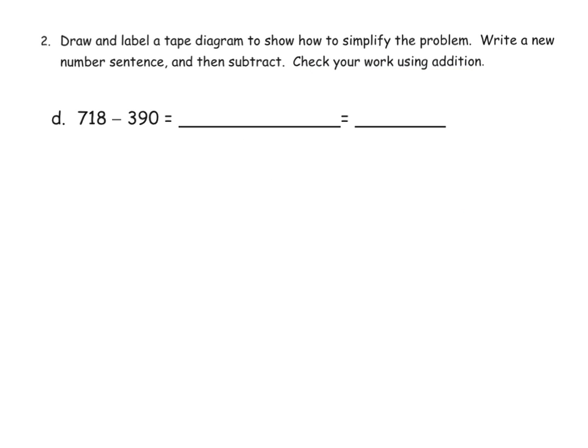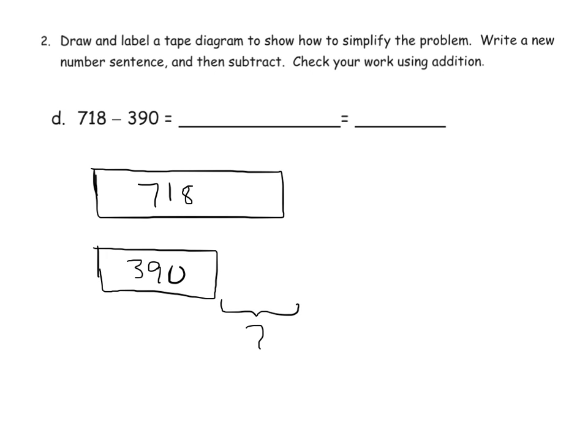And our last problem for this video. We have 718 minus 390. So we're going to draw our tape diagram. Here's 718. And there's 390. And right here, there is our gap. So that is the answer. But subtracting by 390 is a little tricky. So let's bump it up to the next milestone number. So what's the next milestone number?